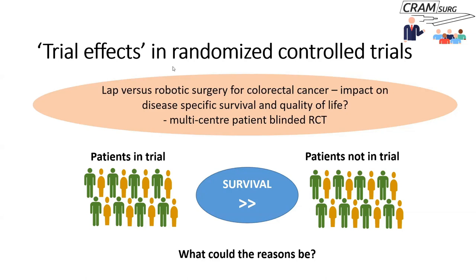Some of you mentioned the Hawthorne effect, and also that people with motivation and concerns about their health may have other attributes that make them generally fitter, more tolerant of treatment, and stronger — so these are probably the patients who end up in trials. There can be a number of different reasons, and that's what we're going to talk about now.